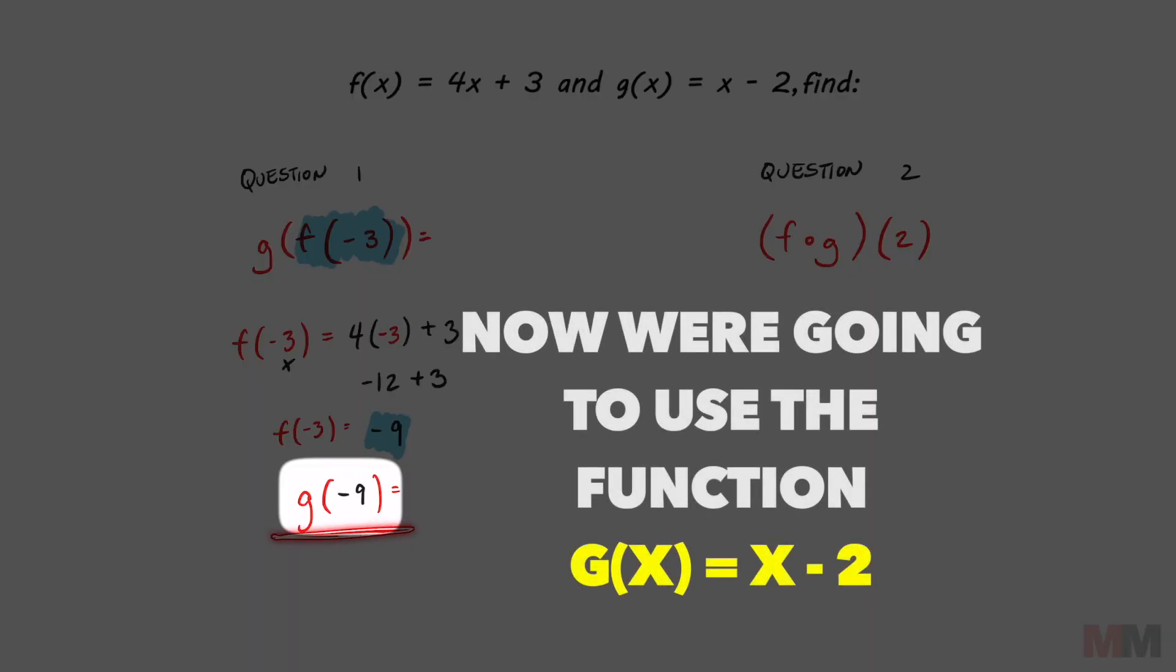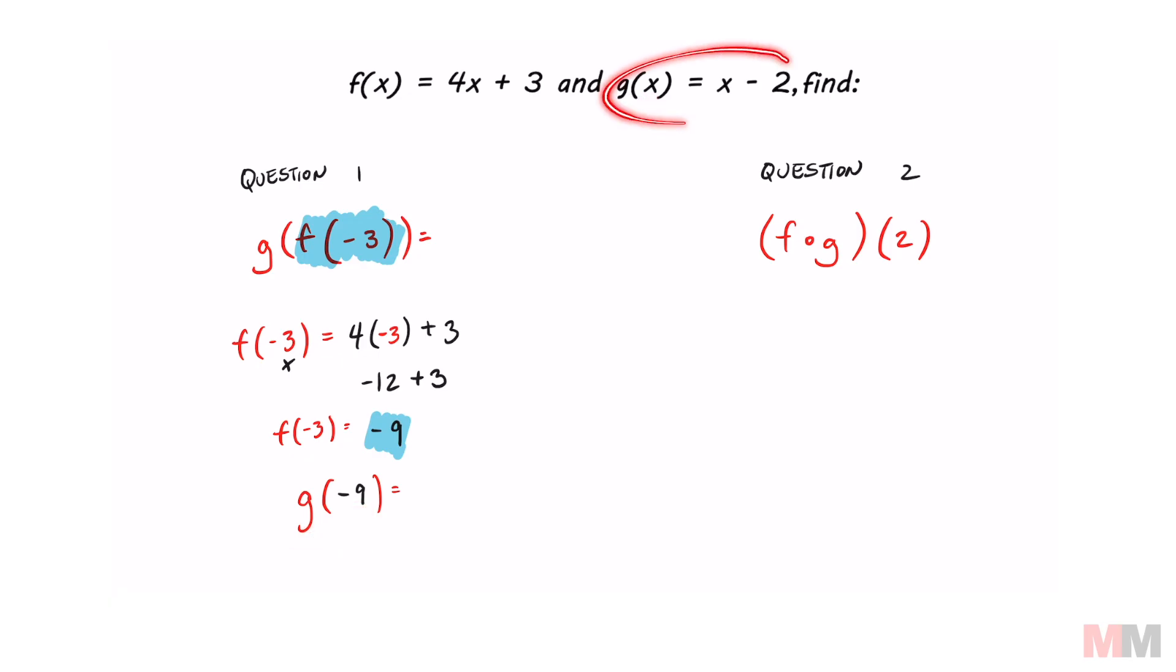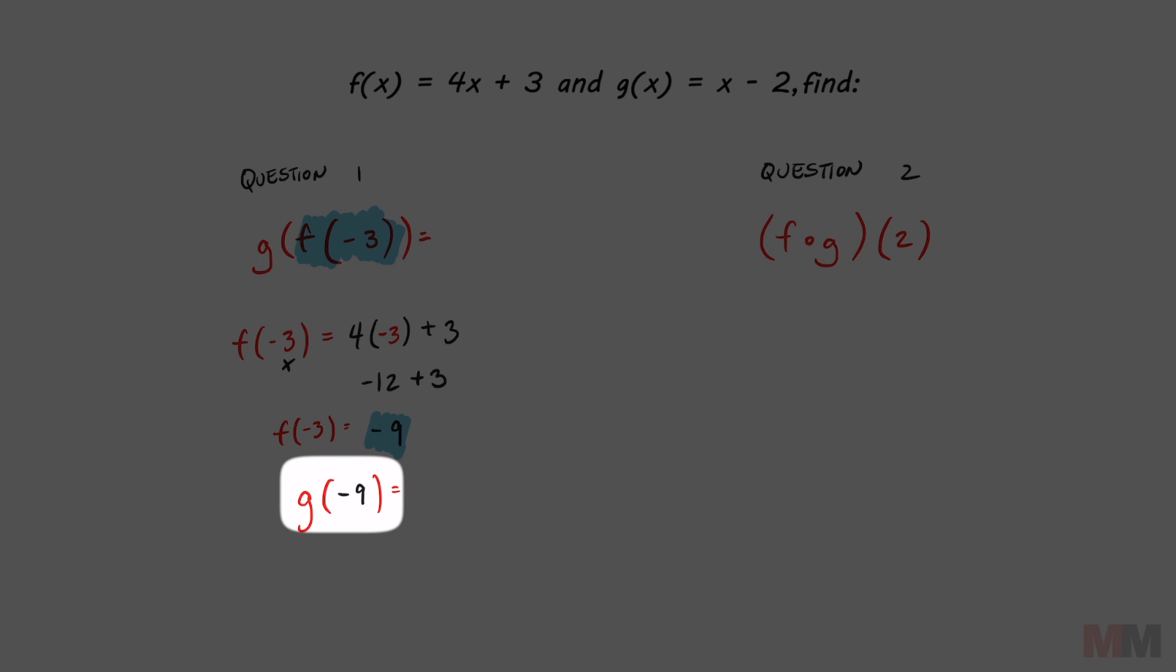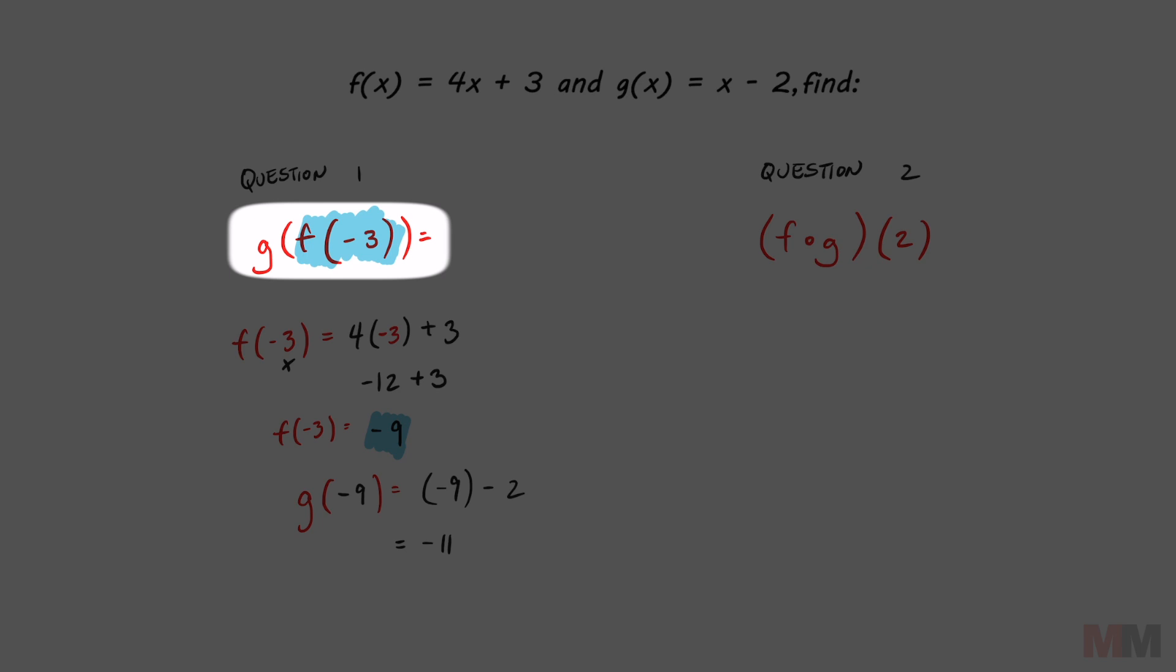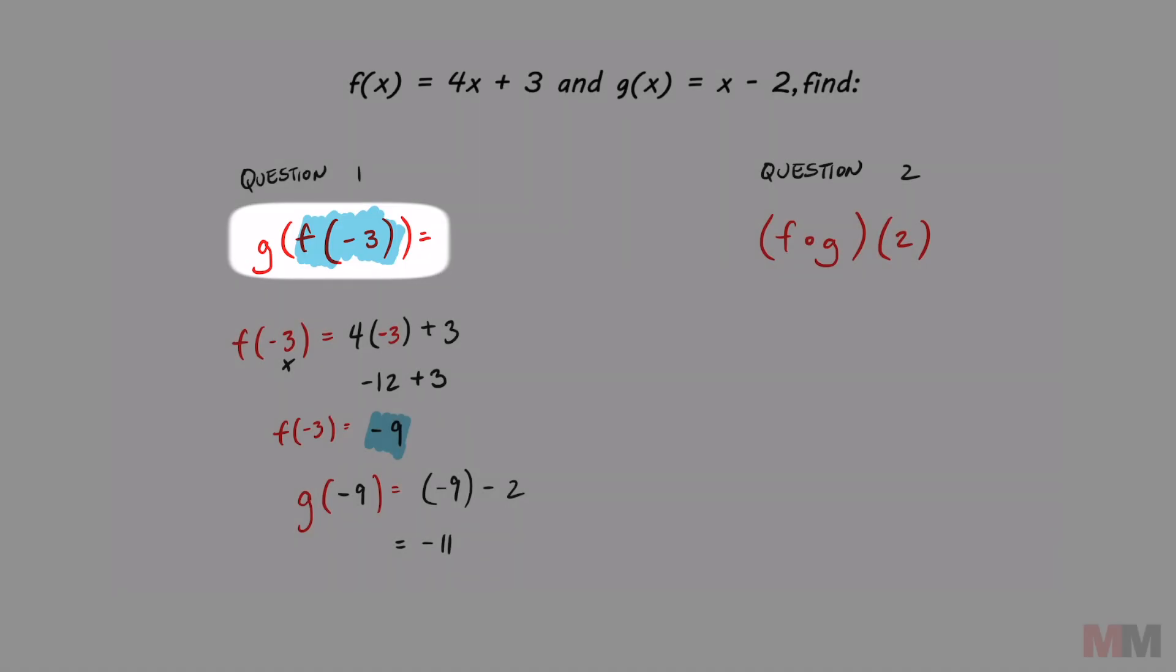except now we're using the function of g with a different input and it's still an x value, but we're using this function now because that says g. To compute that, we're just going to replace that x with my input and my input is negative nine. Negative nine minus two equals negative eleven. G of f of negative three equals negative eleven.